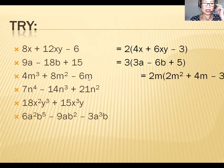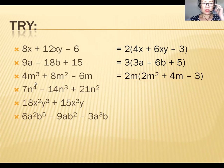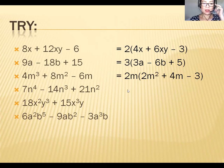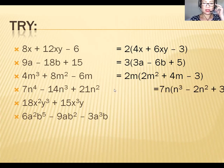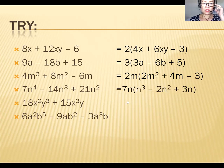Number three: the GCF for 4, 8, and 6 is 2. Divide each term by the monomial and you get the answer. Number four: the GCF for 7, 14, and 21 is 7. Divide each term by 7n and you get the answer.